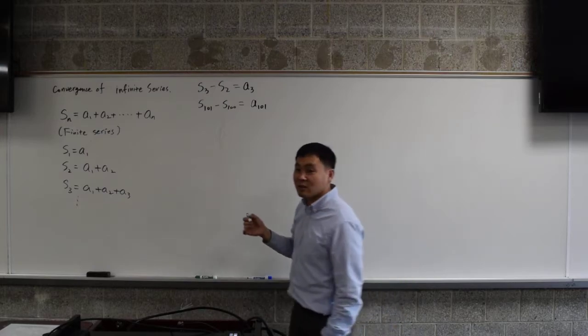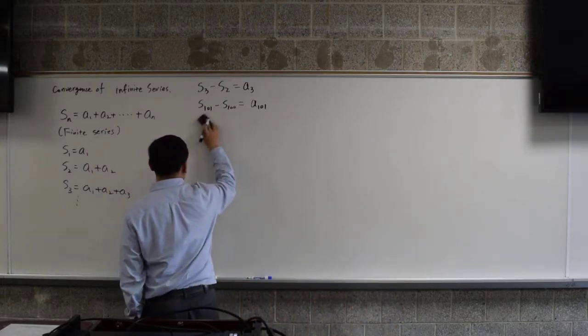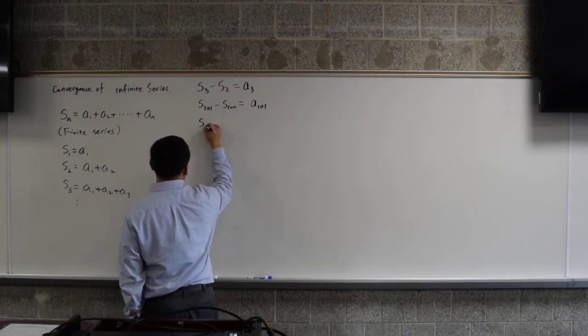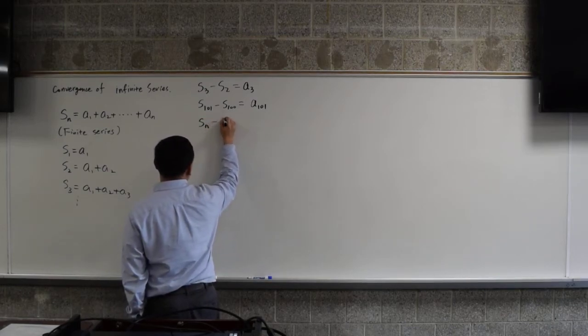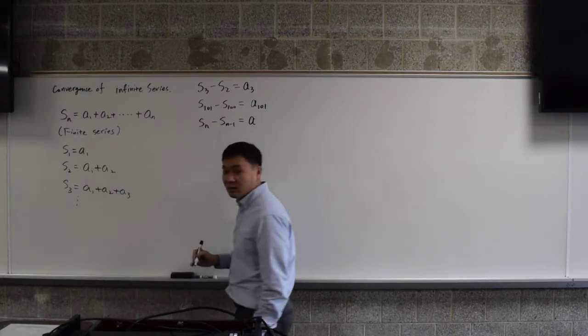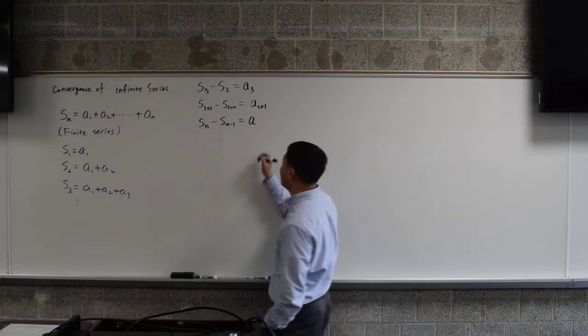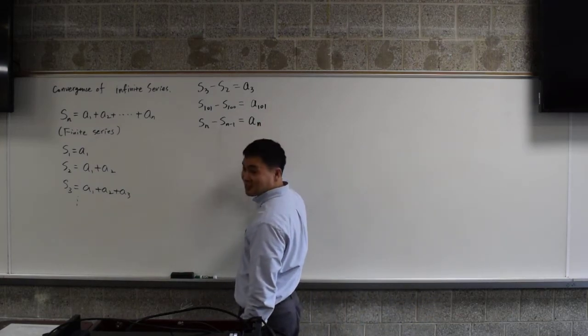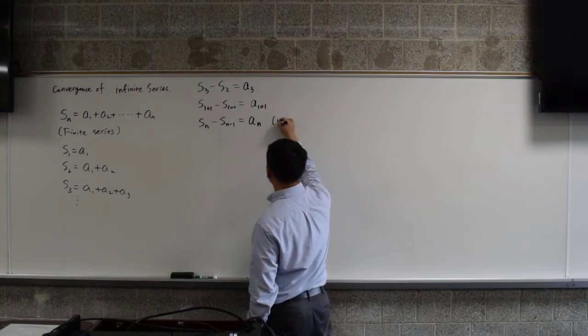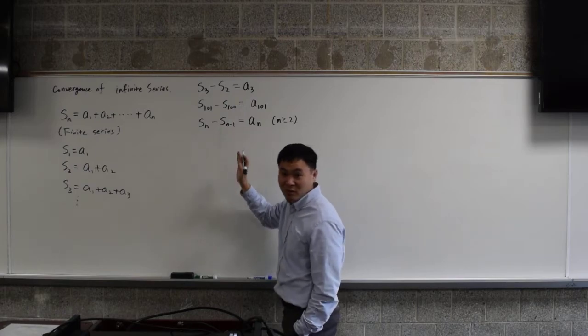So in general, if you do, if you have S of n minus S of n minus 1, you should be getting a of a_n. Now this is only true if n is 2 or greater, because if you have n as 1, then you get S sub 0, which is not defined.